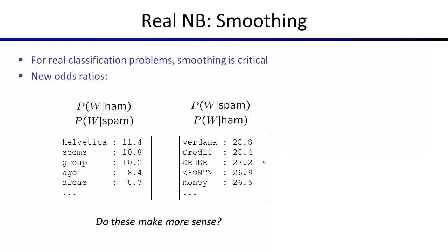For example, under smooth odds ratios, 'money' is twenty-six and a half times more likely in spam than ham — that's reasonable. 'Credit' is similar. Some things are less obvious, like 'Verdana' versus 'Helvetica.' Spammers apparently like Verdana. This actually relates to default fonts on different systems — Mac versus PC — which you can draw your own conclusions about.